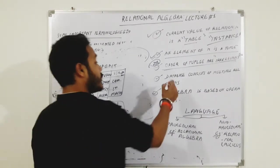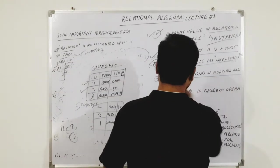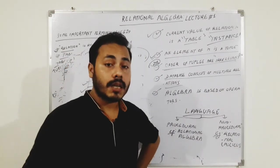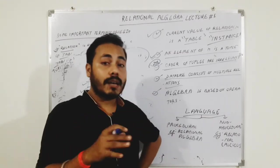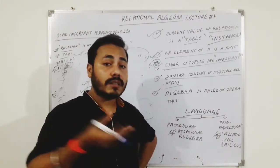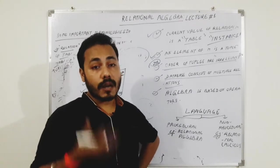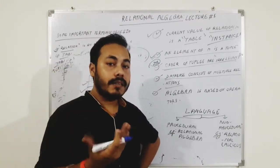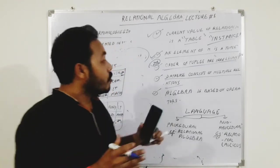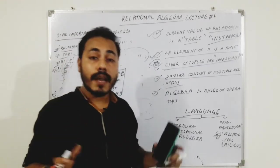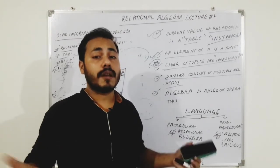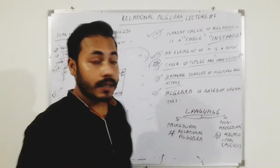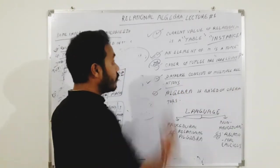A database consists of multiple relations. When we create a database, it consists of a lot of tables. Tables are instances of relations, so ultimately that database includes many relations — maybe two, three, or more relations.